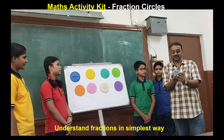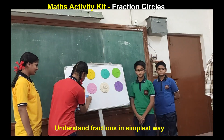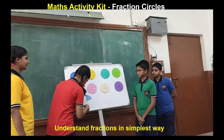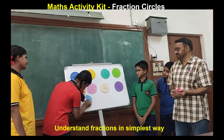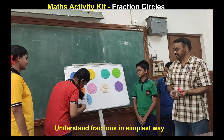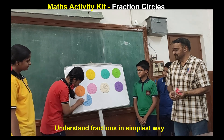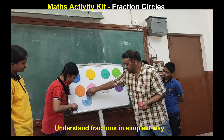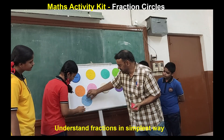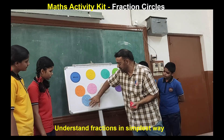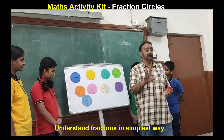Now we have 9 equal parts divided. So we got one complete circle and this whole is now divided into 9 equal parts. Each part is equal to 1 by 9.